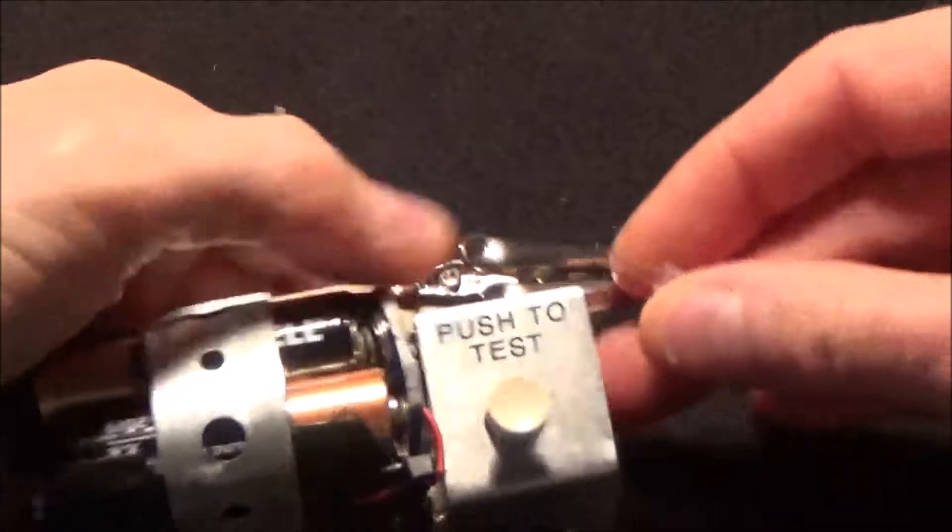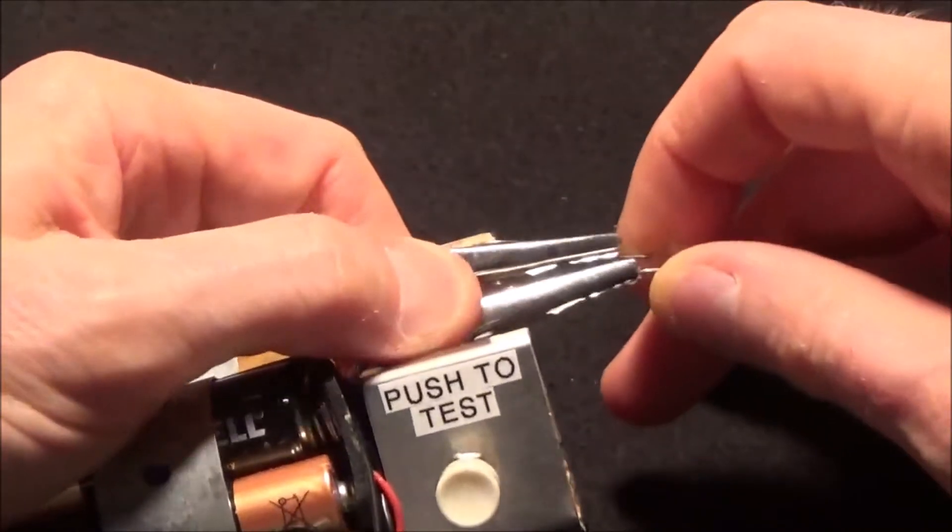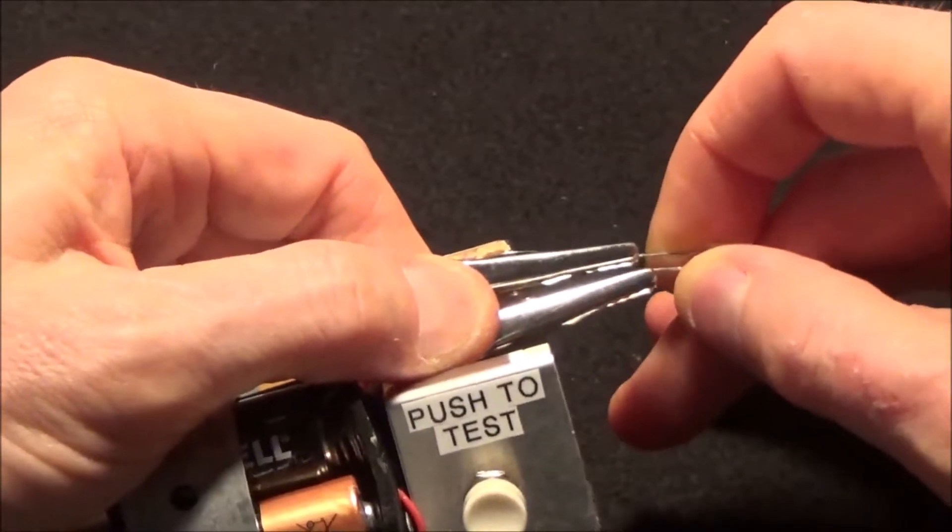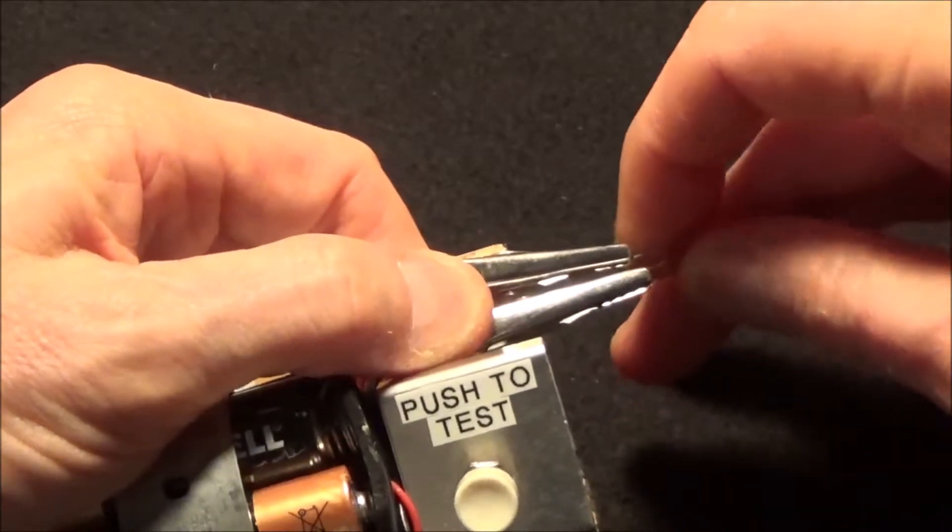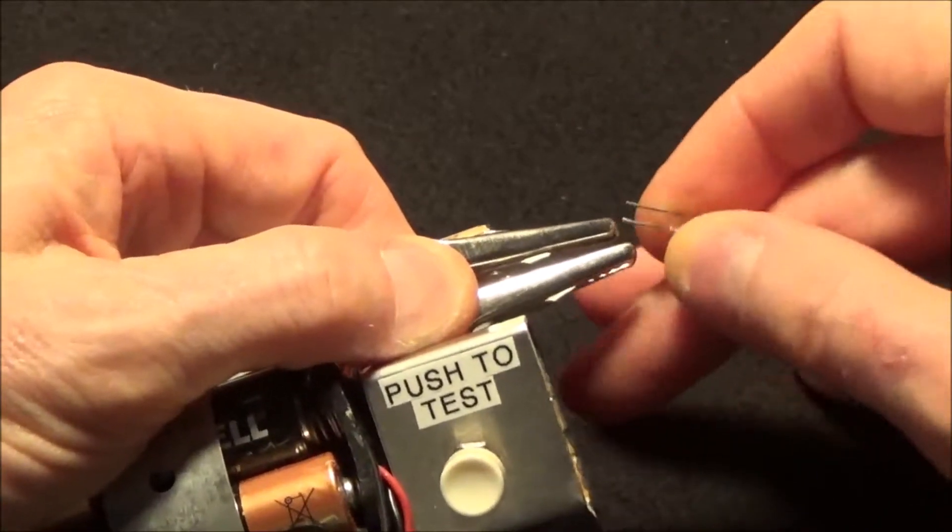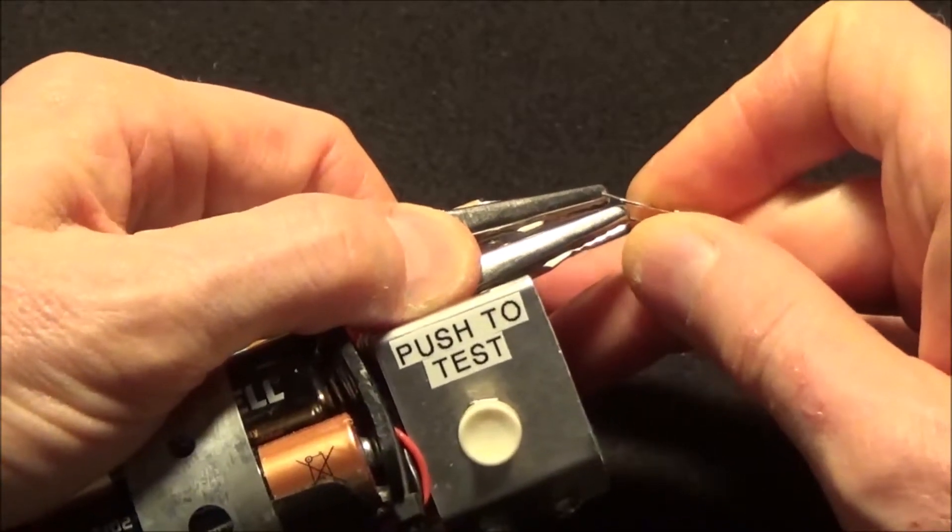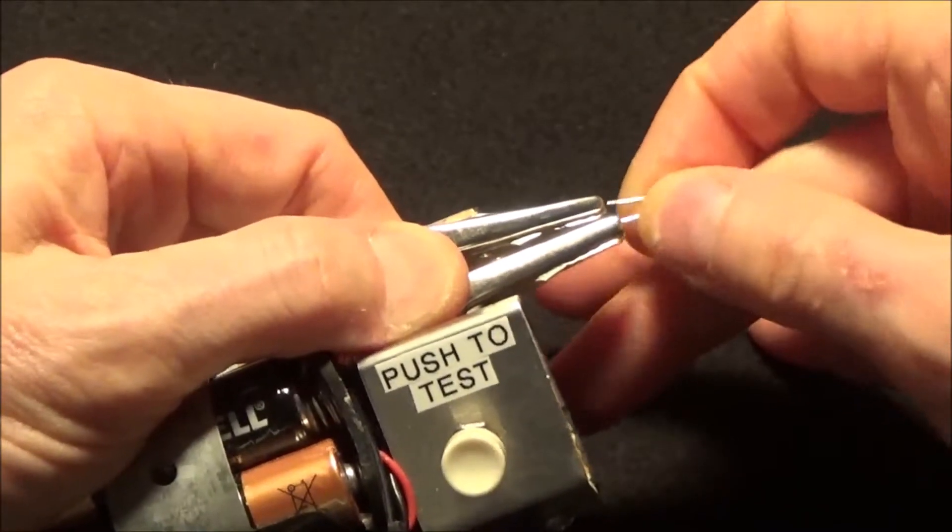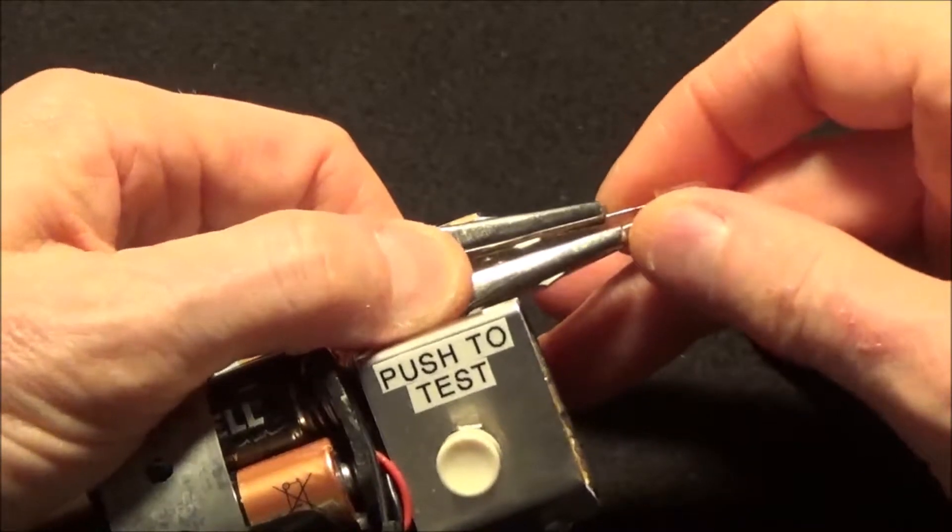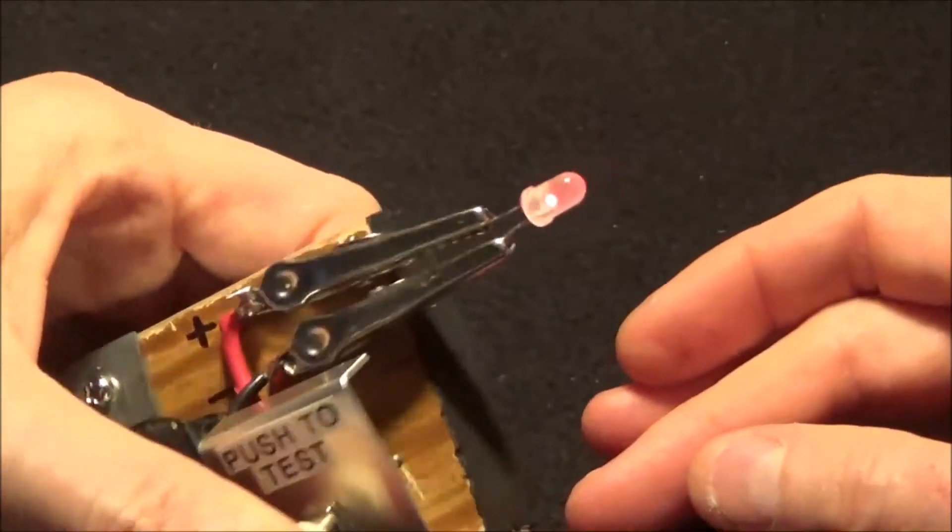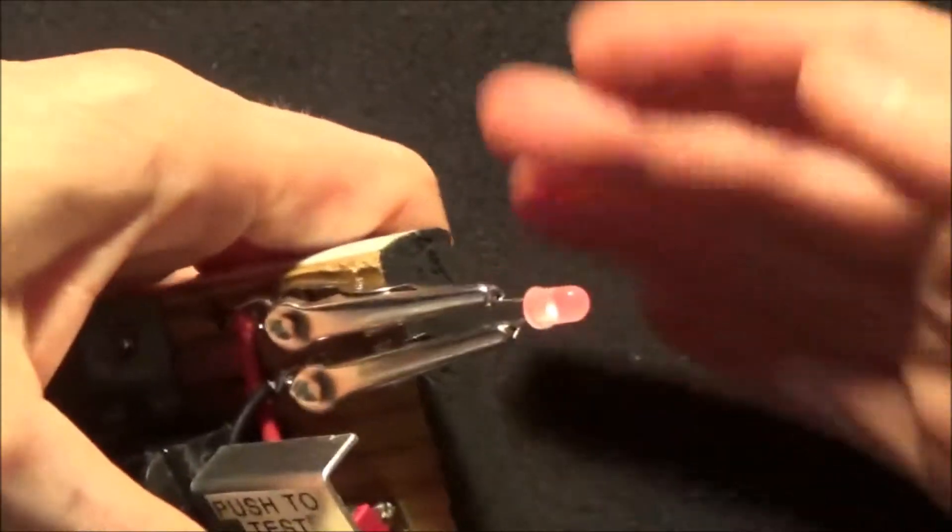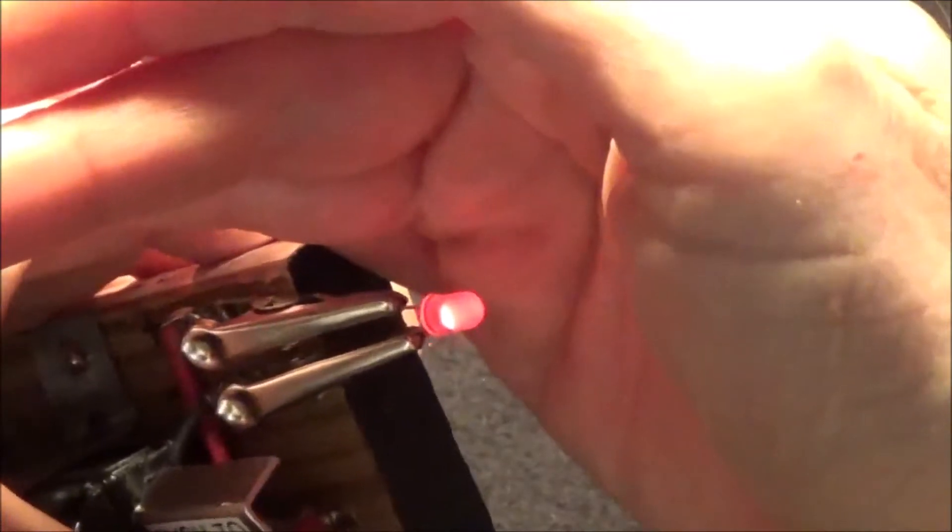So basically the way to use this is you just stick your LED in there. And just like the button says, you gotta spread the legs out a little bit here. And here, it's kind of hard to see, but you can see it's red.